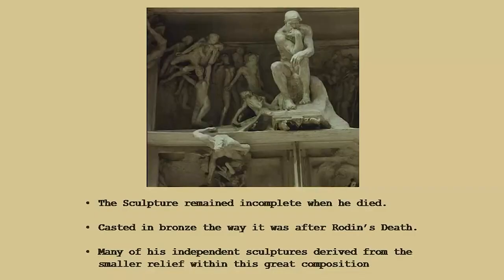The Thinker was originally placed as part of this monumental sculpture called the Gates of Hell. The Gates of Hell remained incomplete when Rodin died, and it was cast in bronze after his death. Many of the independent sculptures were derived from the smaller reliefs within this great composition. So on the one hand, the Gates of Hell was conceived as one single complete monumental work, and on the other hand, from the various details of the Gates of Hell, Rodin later derived a number of ideas for independent and individual sculptures.